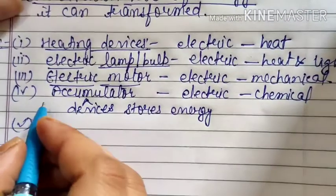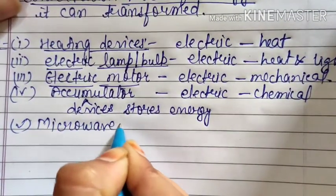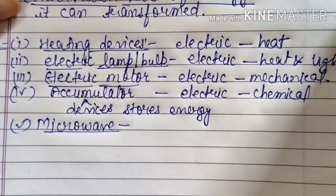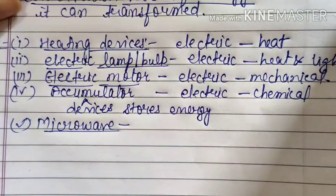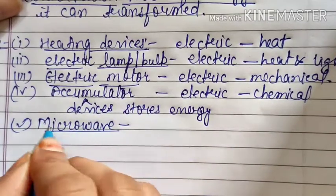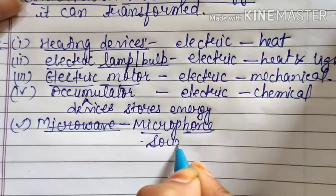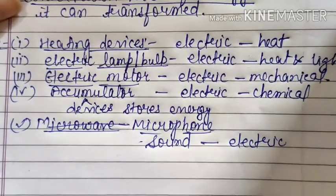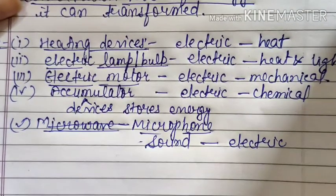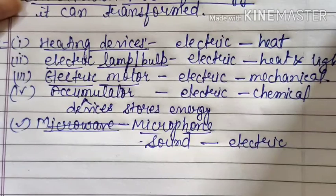Next is the microphone — the mic you use on stage. When we produce sound with the help of vocal cords, that is sound energy. The microphone converts that sound energy into electrical signals. Those signals are then transferred to the loudspeaker, which converts them back into sound energy along with some amplification.